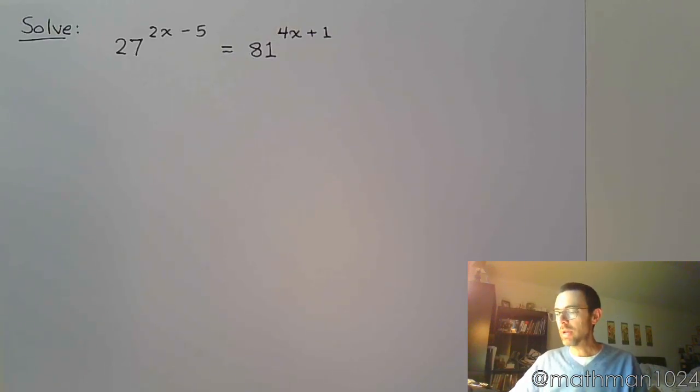All right, we have a few more examples to get through. Let's take a look at this one. 27 to the 2x minus 5 is equal to 81 raised to the 4x plus 1.